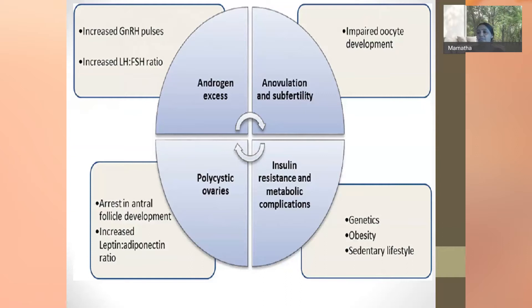Various diagnostic milestones have been established. The National Institute of Health in 1990 concluded that clinical or biochemical evidence of hyperandrogenism along with oligo- or anovulation is sufficient to diagnose polycystic ovarian disease. Later, the Rotterdam diagnostic criteria included that hyperandrogenism need not be clinically evident, and polycystic ovarian morphological changes in the ovaries in the presence of clinical features can also confirm the diagnosis.